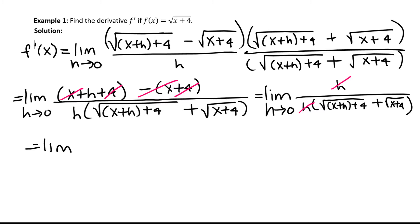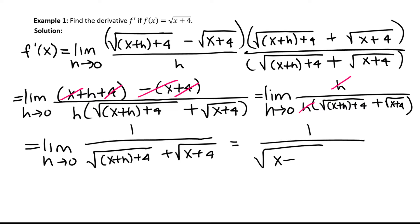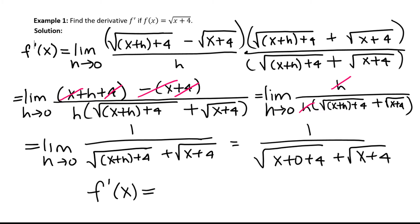This becomes the limit as h approaches 0 of 1 in the numerator, and the denominator is the square root of x plus h plus 4, plus the square root of x plus 4. We can now do direct substitution — put in 0 for h. So we have 1 divided by the square root of x plus 4, plus the square root of x plus 4. The derivative f prime of x equals 1 divided by 2 times the square root of x plus 4.